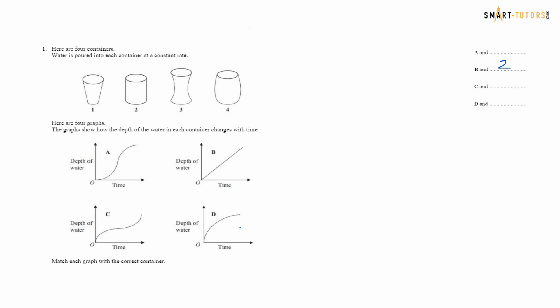Container number one: the cross-sectional area is increasing — small at the bottom and large further up — so the water level rises gradually, not rapidly. That matches graph D. For container three, the water level is rapidly increasing at first then gradually increasing, matching graph A. Finally, container four matches graph C, which is gradually increasing then rapidly increasing.